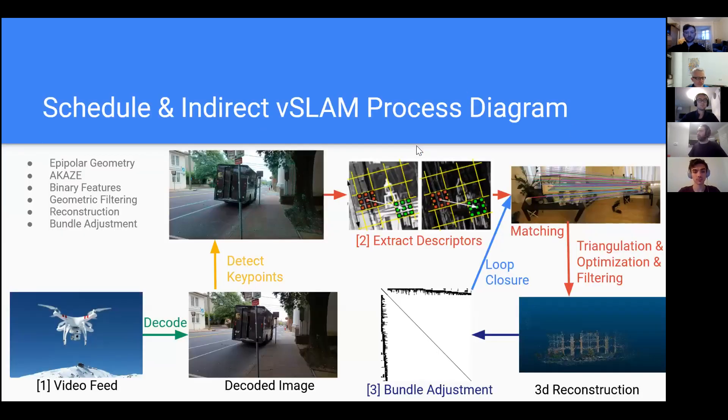So today, what we're going to talk about is what's spelled out here. So we're going to talk about what a visual SLAM pipeline or structure from motion pipeline might look like. And I'm going to talk specifically about some things that we do use in Rust CV and some things that we don't.